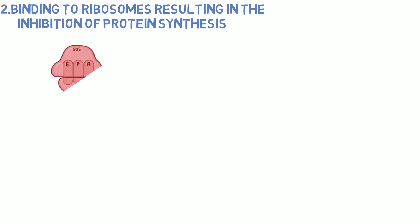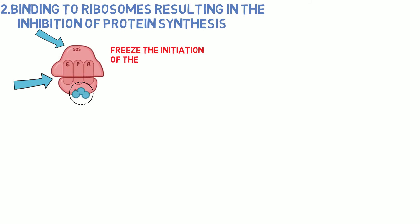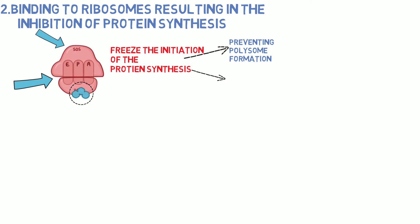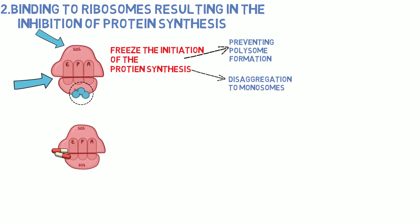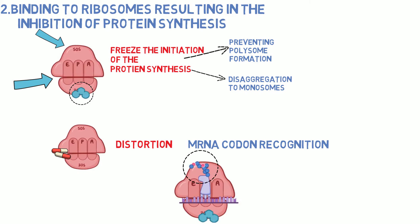Once inside, streptomycin specifically binds to the 30S ribosomal subunit, while other aminoglycosides bind to the 50S subunit or the 30S-50S interface. After binding to the ribosome, they freeze the initiation of protein synthesis by preventing polysome formation and promoting their disaggregation to monosomes. 30S-50S interface-binding aminoglycosides cause distortion of mRNA codon recognition, resulting in misreading of the code, so abnormal peptide chains are produced and no functional protein is formed.